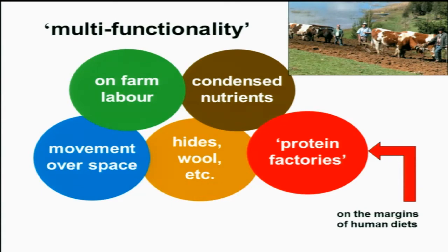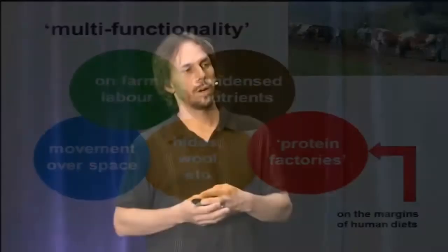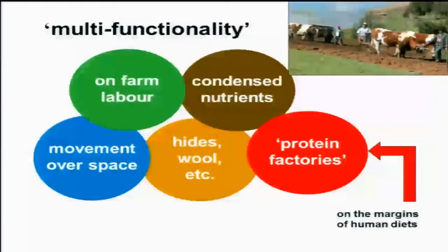Animals provided condensed nutrients — they spread their manure around fields and provided an important source of fertilizer, and in some cases a source of fuel, with manure used as fuel in certain parts of the world. Animals also played a fundamental role in moving things across space, and then there were other byproducts like hides and wool. They also provided some flesh, eggs, and milk, with eggs and milk often being more important than flesh on the consumption side.